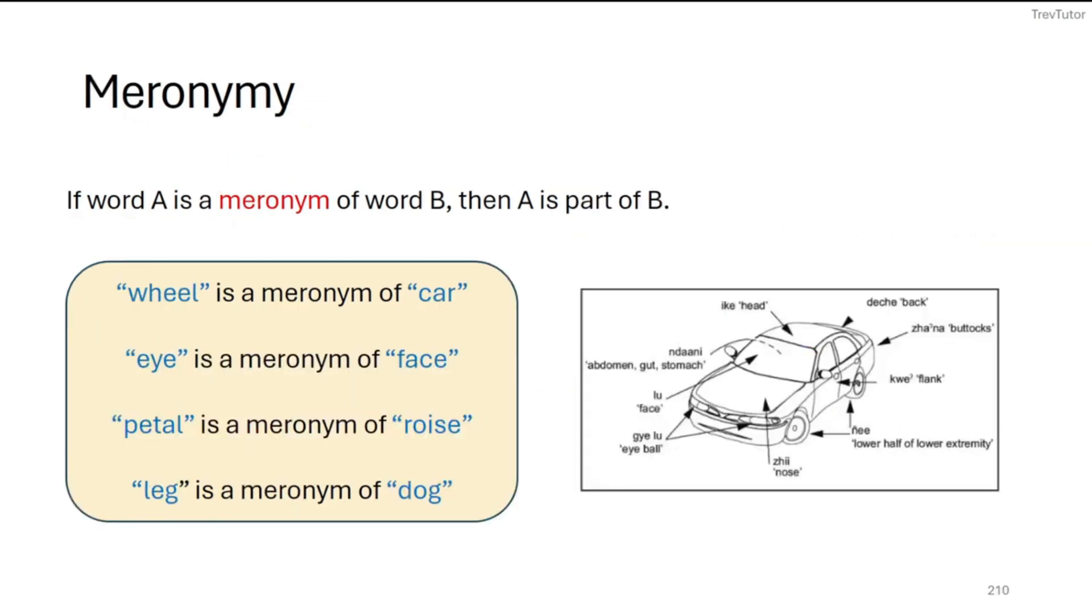The last one is meronymy. So this is one that I'd never heard of before I took a linguistics course. And this is the 'a part of' relationship, as in a component of something. So this isn't about the general or specificity of it. This is whether or not an individual thing is the part of a whole. So in the right, we have a car diagram. And we can say some things about cars. For example, wheel is a meronym of car. In other words, wheel is a part of a car. Your eye is a part of your face, so we say eye is a meronym of face. Petal would be a meronym of rose because roses have petals. And leg would be a meronym of dog, as well as human, as well as cat, and a bunch of different things, because legs are a component of what makes up a living mammal for the most part.